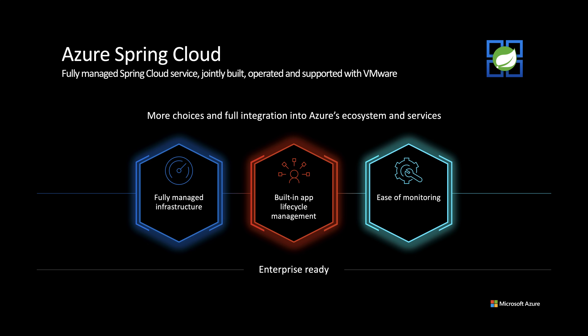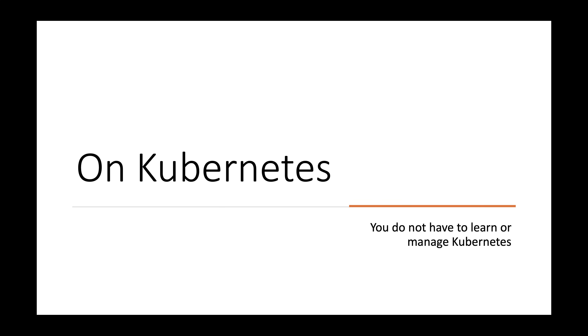You can simply deploy your JARs or code, and Azure Spring Cloud will automatically wire your apps with the Spring Service runtime. Once deployed, you can easily monitor application performance, fix errors, and rapidly improve applications. It's integrated into Azure's ecosystem and enterprise-ready. The service is jointly developed, operated, and supported by Microsoft and VMware. And the exciting part is you get the power of Kubernetes, but you don't have to worry about learning or managing it.